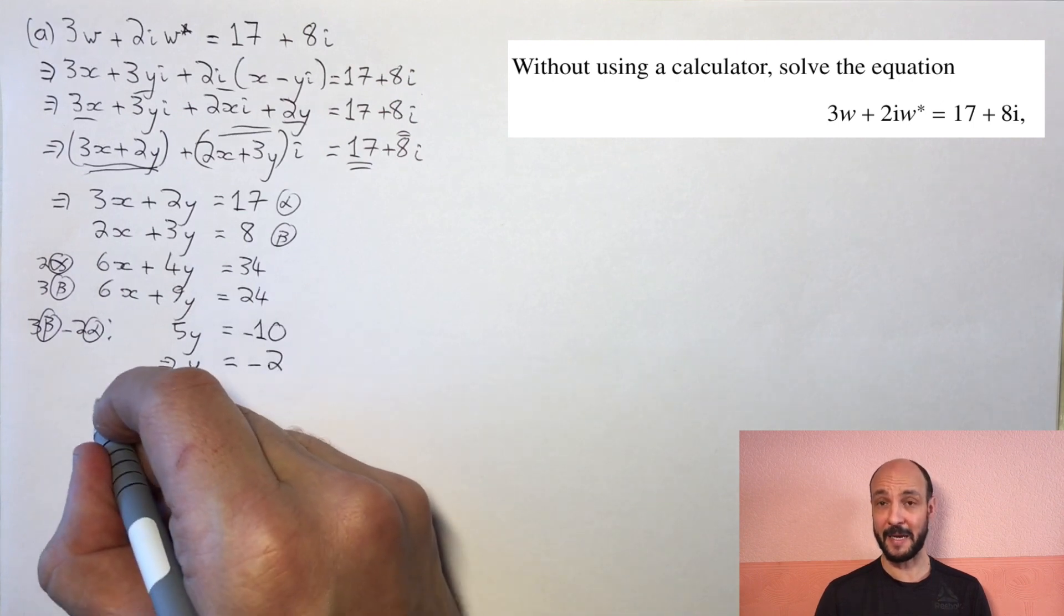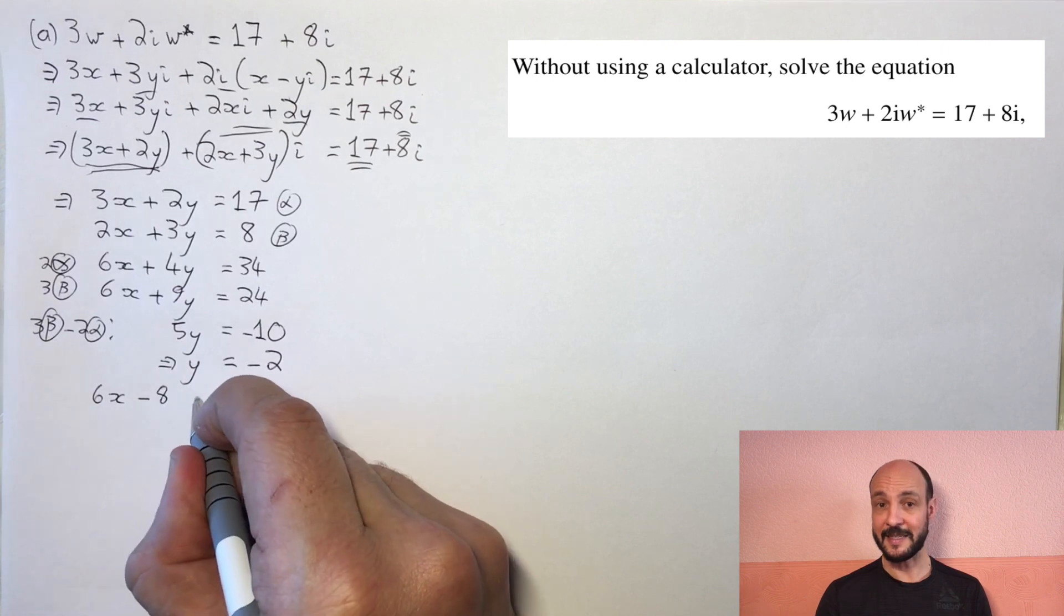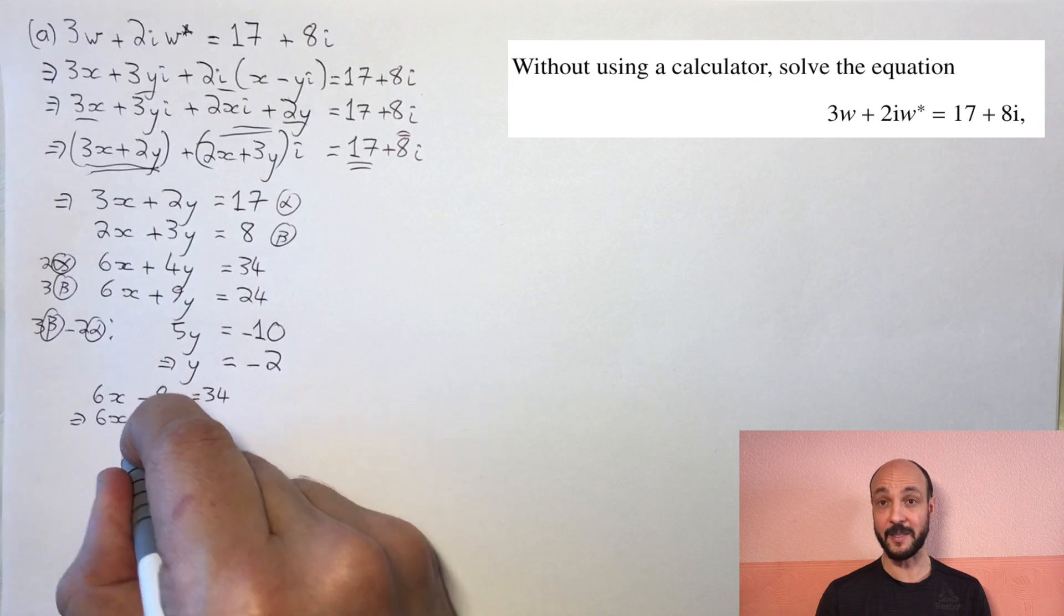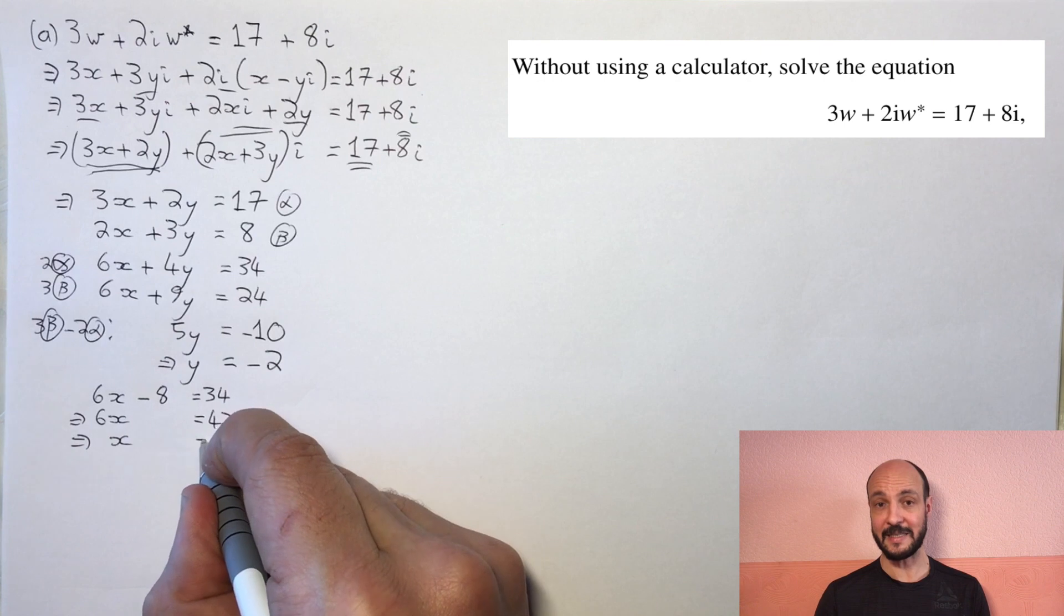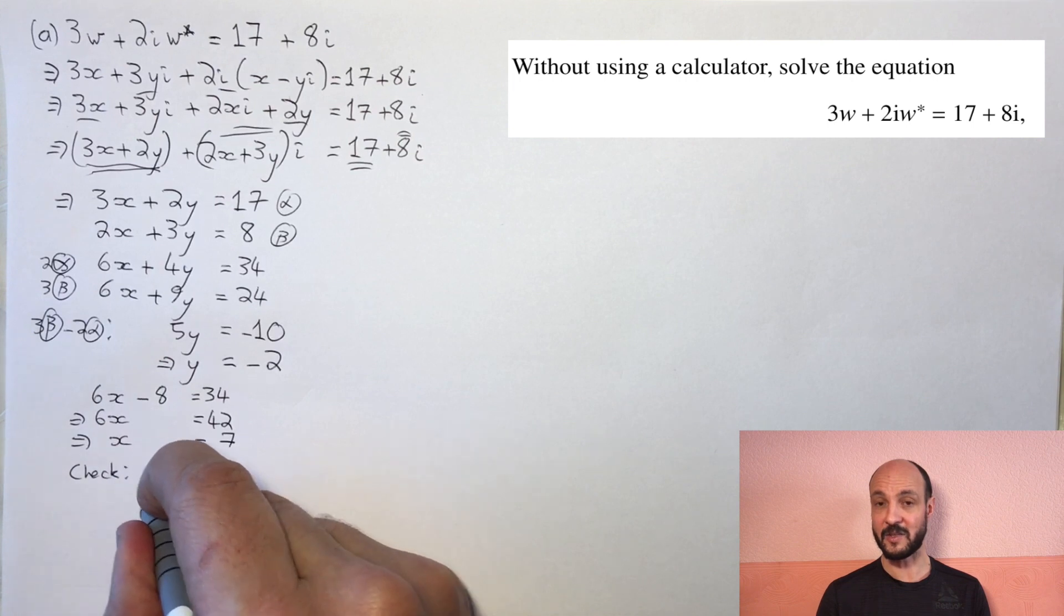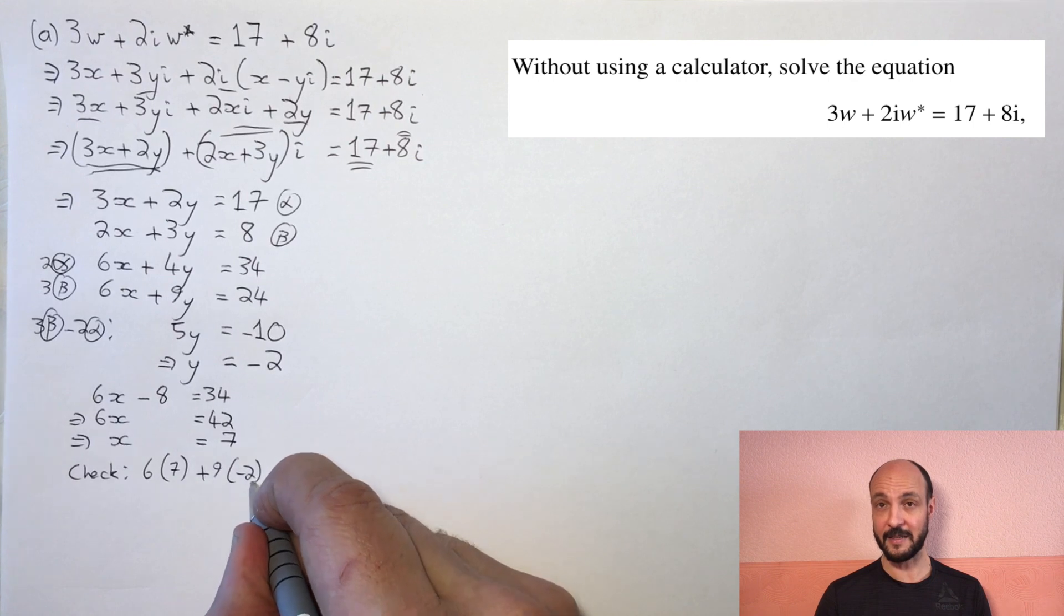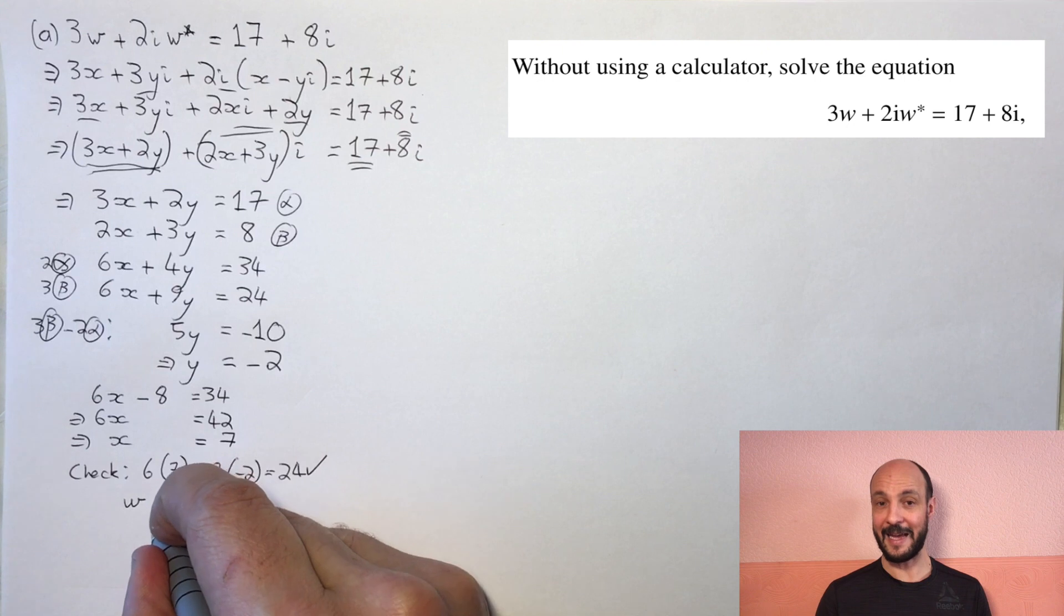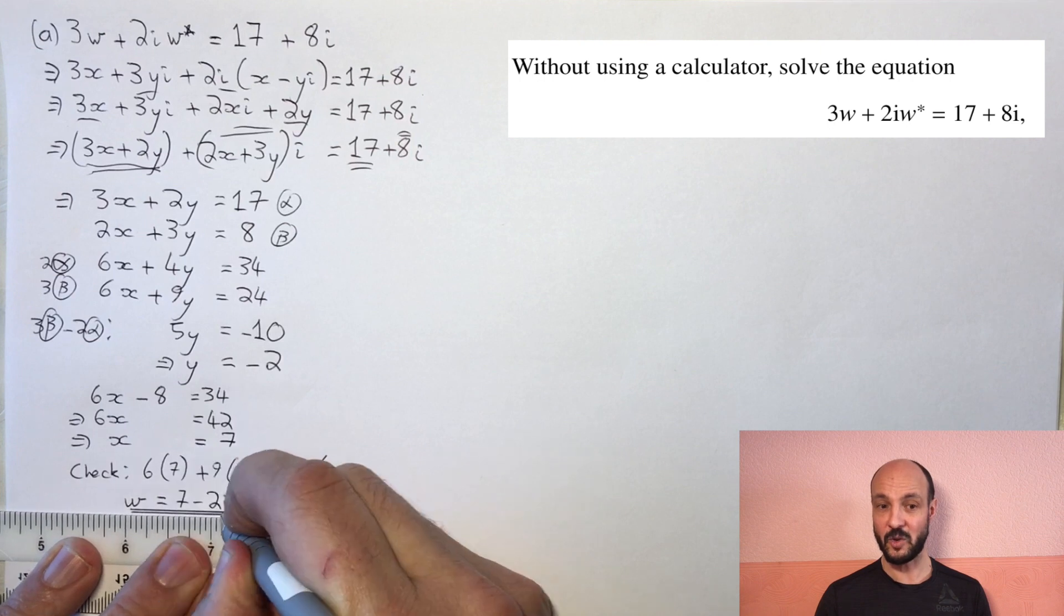So we just need to substitute that back into one of our equations. I'll substitute it into alpha, where it gives us 6x minus 8 equals 34, add 8 to both sides, 6x equals 42, so x equals 7. And we can use equation beta as a check step, if we want to make sure we've got that right, to see that 6 times by 7 plus 9 times by minus 2 is equal to 42 minus 18, which is 24, which is the right side of equation beta. So we've checked that it's correct. So for our final answer, we put x plus yi, where x is 7 and y is minus 2, so our final answer is 7 minus 2i.